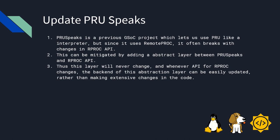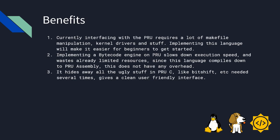One might ask, what are the benefits of doing this project? There are many. Currently interfacing with the PRU requires a lot of makefile manipulation, kernel drivers, and other complexity. Implementing this language will make it easier for beginners to get started. Implementing a bytecode engine on the PRU slows down execution speed and wastes already limited resources. Since this language compiles down to PRU assembly, it does not have any overhead. It hides away all the complex parts in PRU C like bit shifts needed several times, and gives a clean user-friendly interface so that a beginner can easily get started with the PRU.